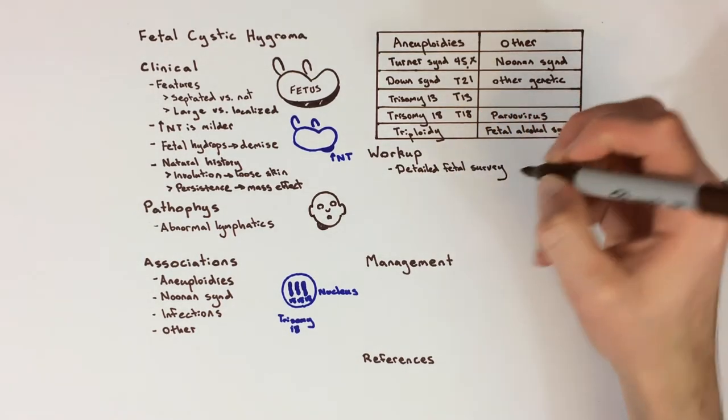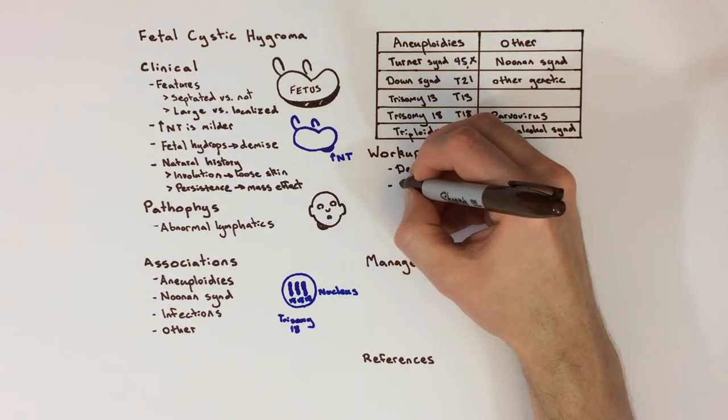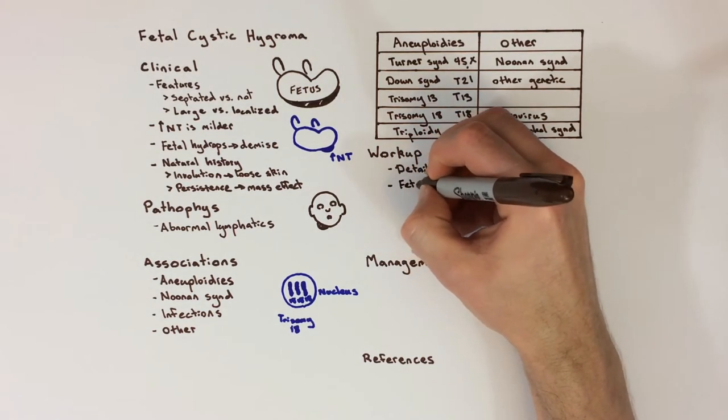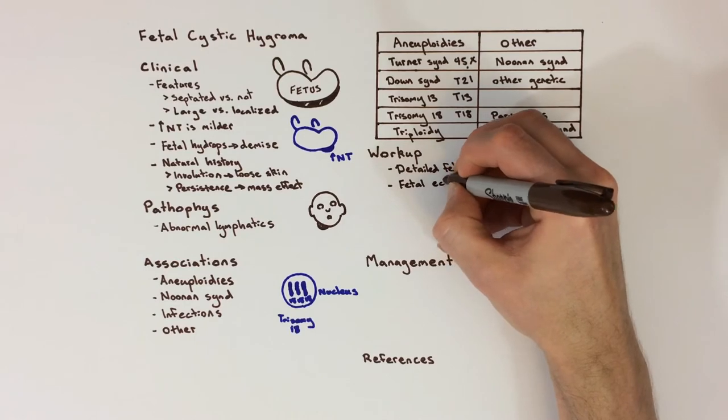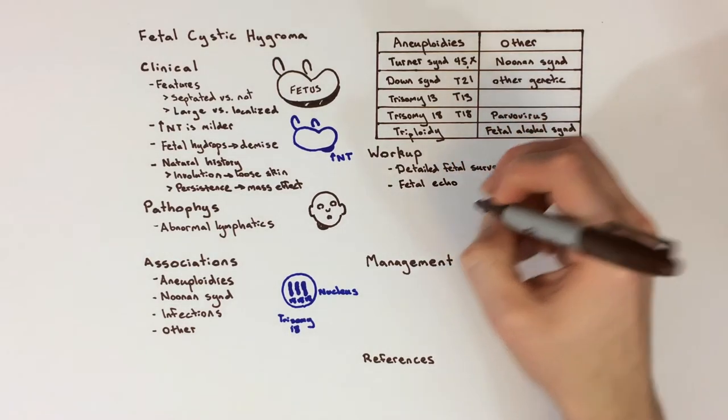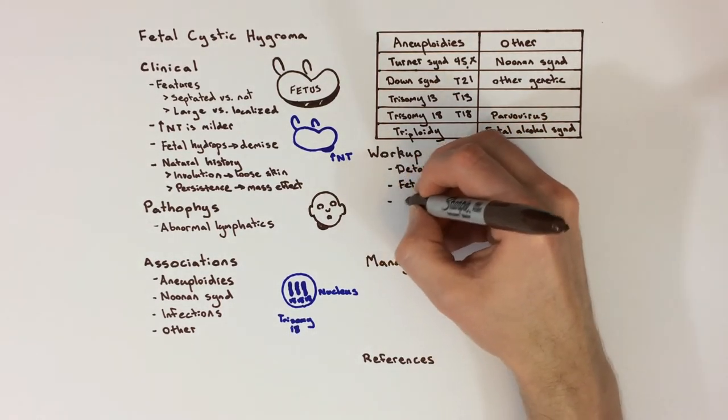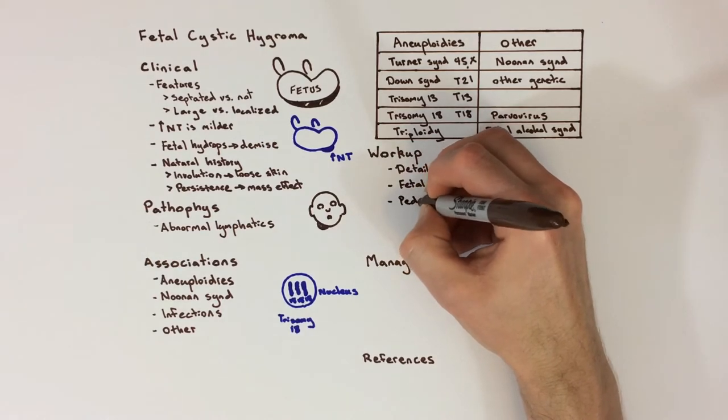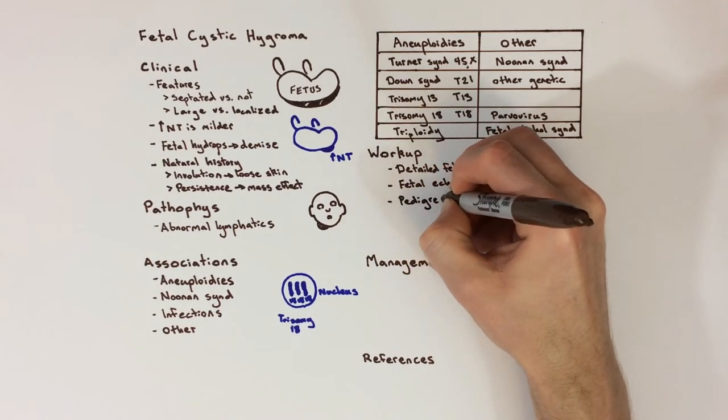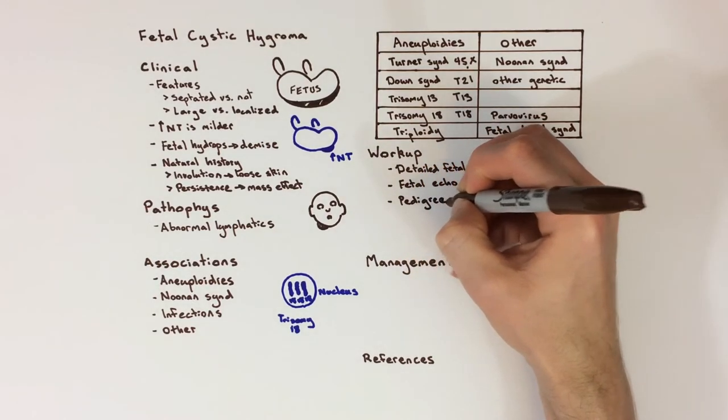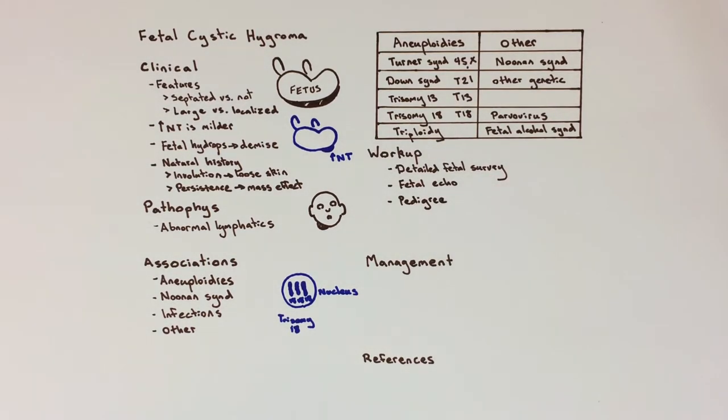A detailed fetal survey is done by ultrasound, both when the cystic hygroma is discovered and later in the second trimester to look for changes in the cystic hygroma and for other birth defects. An ultrasound devoted solely to the fetus's heart, called a fetal echocardiogram, is also recommended at around 20 weeks gestation to evaluate for fetal heart defects. A family medical history, called a pedigree, is also obtained.